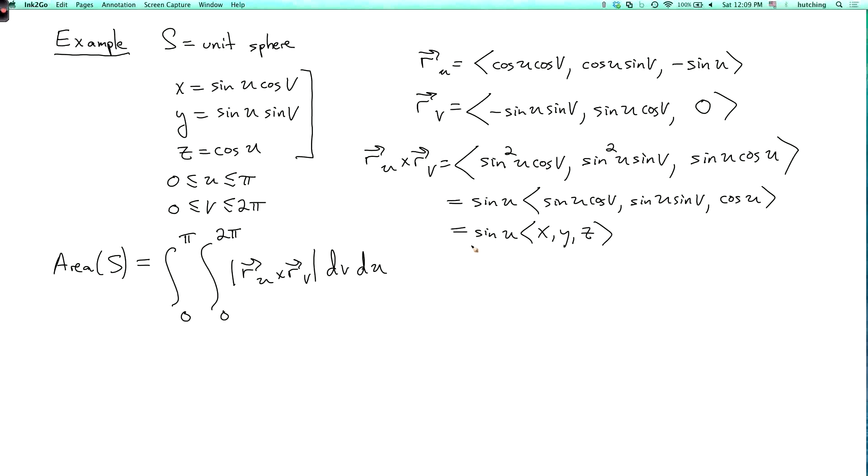x, y, z is a unit vector because we're on the unit sphere. So the length of this vector is just the absolute value of sine u. And furthermore, since u is between zero and pi, sine u is positive. So I don't even need an absolute value sign. So this is the integral from zero to pi, integral from zero to two pi, of sine u, dv, du.